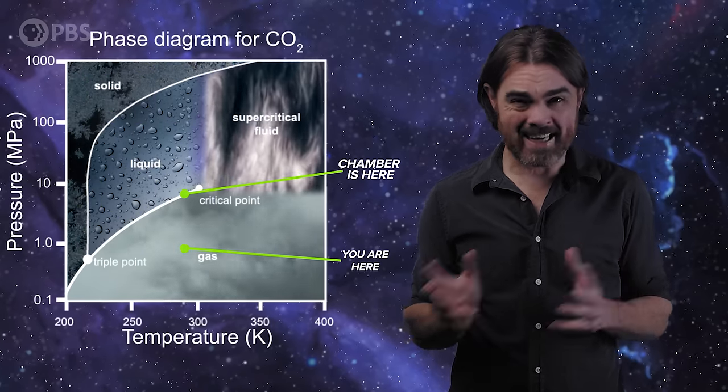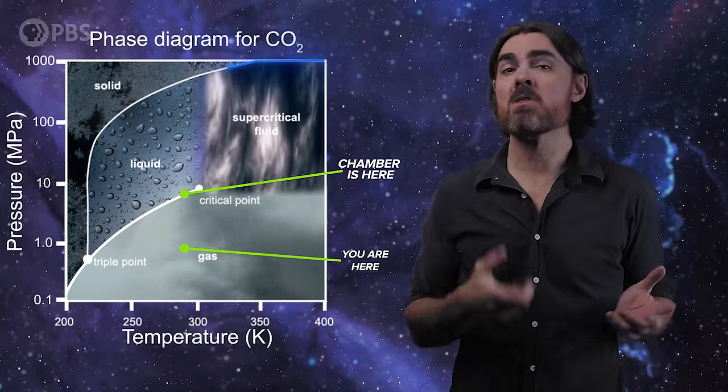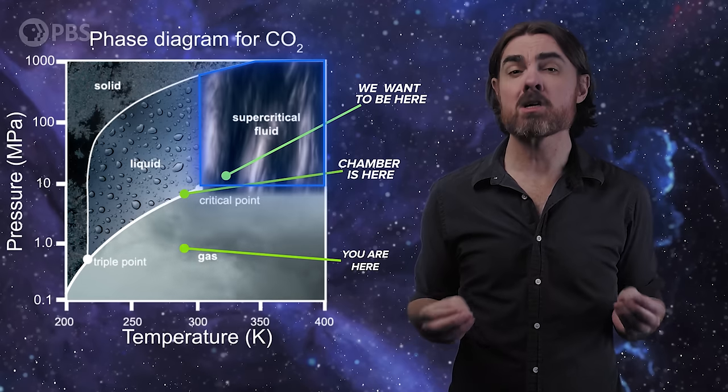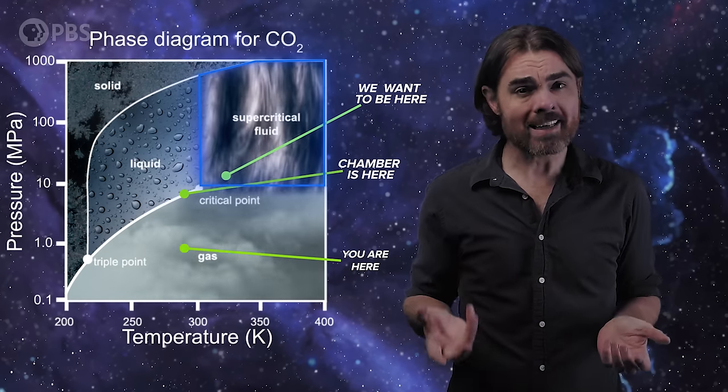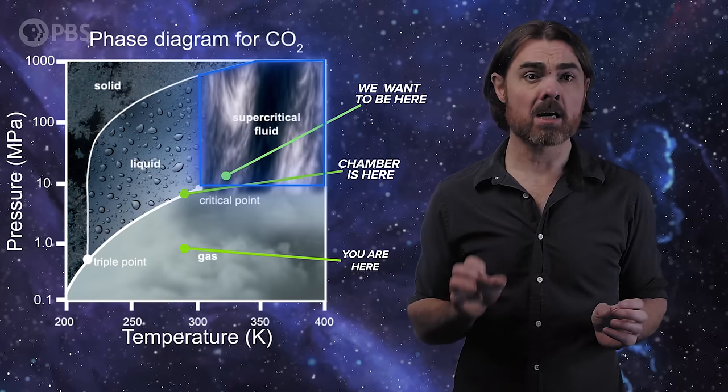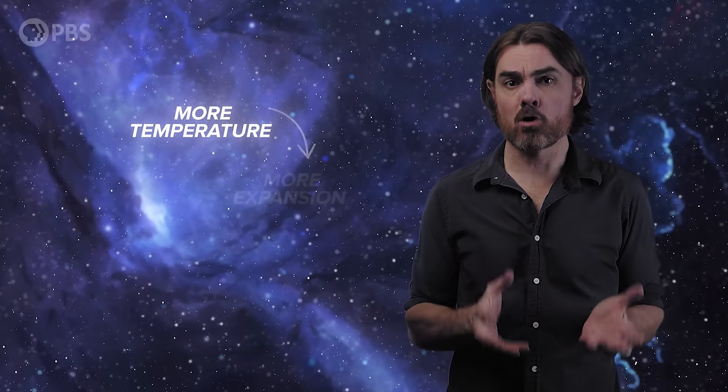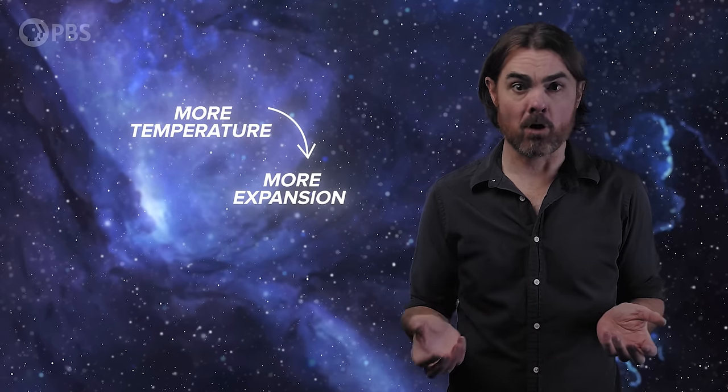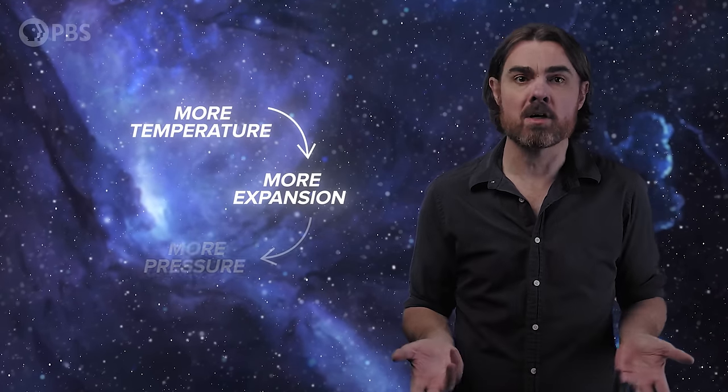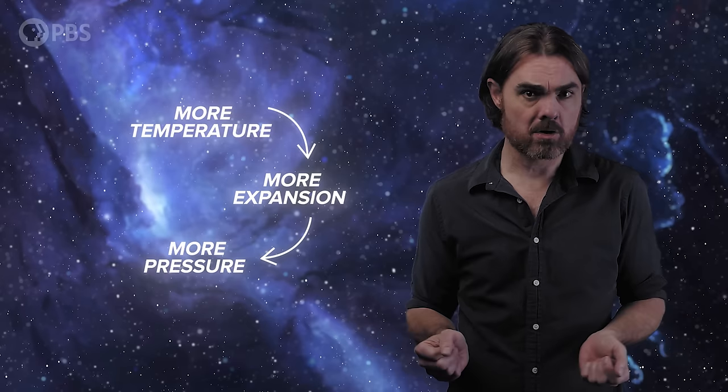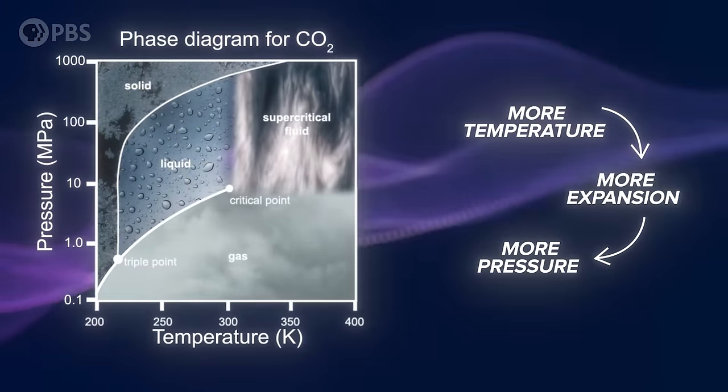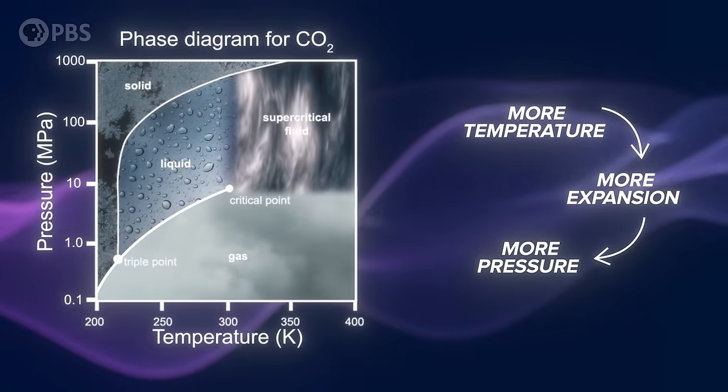To reach supercriticality we need to get to this part of the diagram. So both pressure and temperature need to increase. Conveniently enough it's possible to get there just by adding heat. And Nigel does that with a hairdryer. As temperature rises the pressure of the gas increases a proportional amount. But this temperature is also causing thermal expansion in the liquid, which reduces the volume of the gas, which further increases the pressure all around.